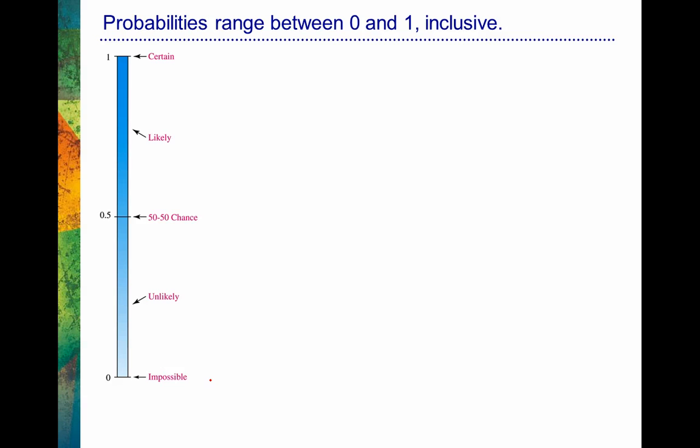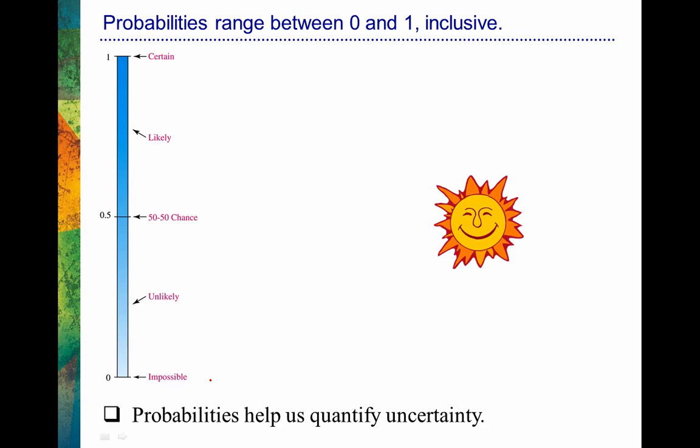Let's go through a couple of examples. When we're talking about probability, we're just talking about a way to help quantify uncertainty. Think about the sun rising. Someone might say the probability that the sun will rise tomorrow is 0.5 because it's either going to rise or it's not going to rise. And that's really a vast oversimplification of probability.